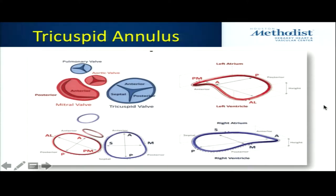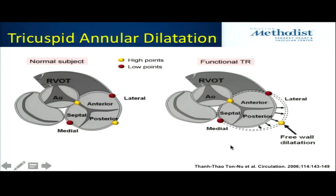The tricuspid annulus, much like the mitral, is saddle-shaped — though it is a little less saddle-shaped than the mitral. When we look at the atrial septum in the middle, we have the septal, the anterior, and the posterior leaflets. Tricuspid annular dilation really just follows the ventricular dilation, attached to the lateral free wall, and that's where dimensions expand.